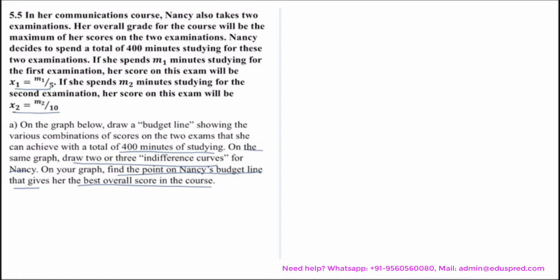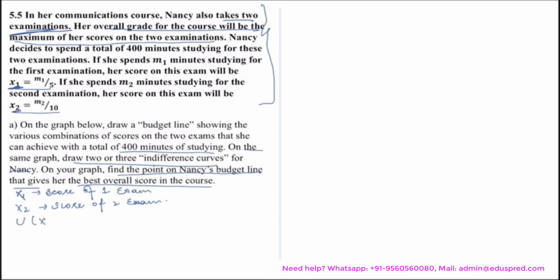This question might seem difficult — note that x1 = M1/5 and x2 = M2/10, and the overall grade is a maximum function. Let's break down what we know. The score on the first exam is x1 and on the second exam is x2. The overall score is the utility function U(x1, x2) = max(x1, x2), since Nancy wants to maximize her score.